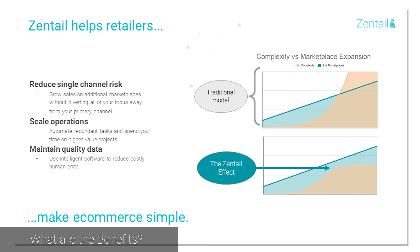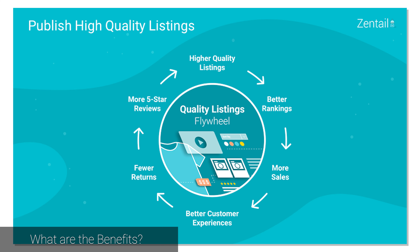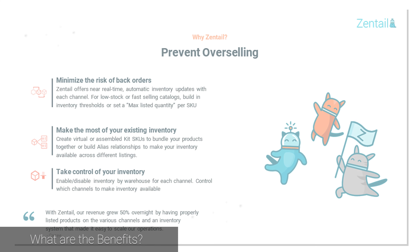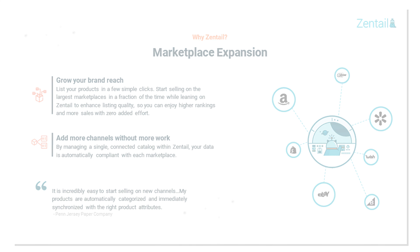Instead, you can grow, save time, scale, and maintain quality data. Publish high-quality listings and ignite the listing quality flywheel on all of your sales channels. Our intuitive workflow automation saves time by automating redundant tasks or creating automation for your business. We prevent overselling by leveraging fast sync times and advanced inventory manipulation to minimize the risk of back orders. With marketplace expansion, you can grow your presence on today's largest marketplaces, gain actionable insights, and keep your finger on the pulse of your sales, inventory, and product data.